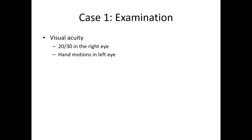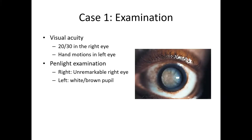On examination, her visual acuity was 20/30 in the right eye and hand motions in the left eye. Penlight examination of the anterior segment showed the right eye was unremarkable, but the left eye showed a brown-white object within the pupil, as shown in the image to the right. This was most consistent with a cataract.